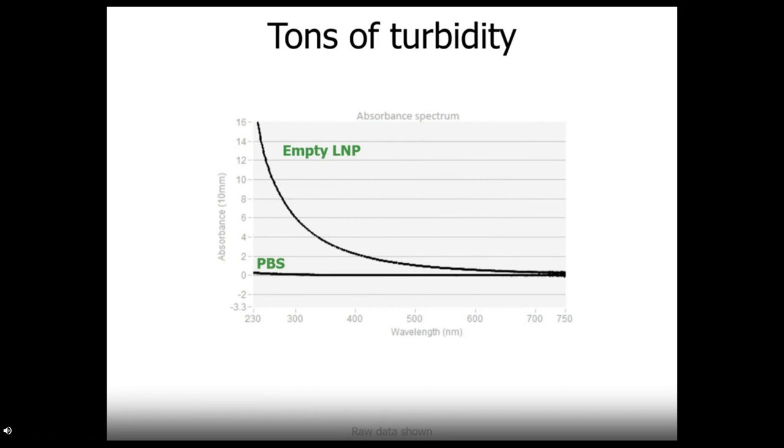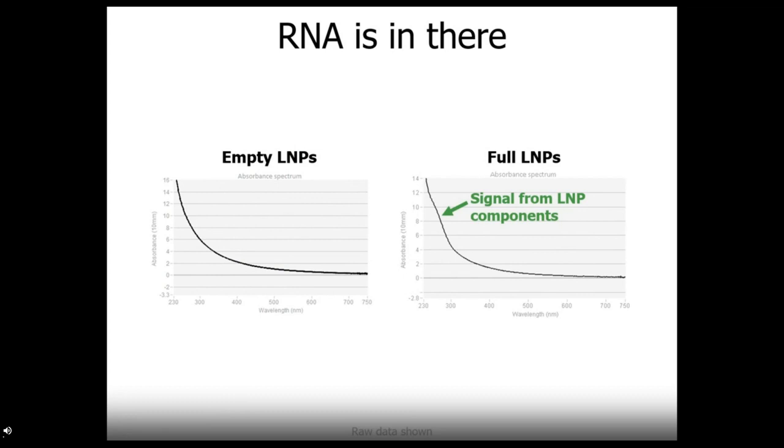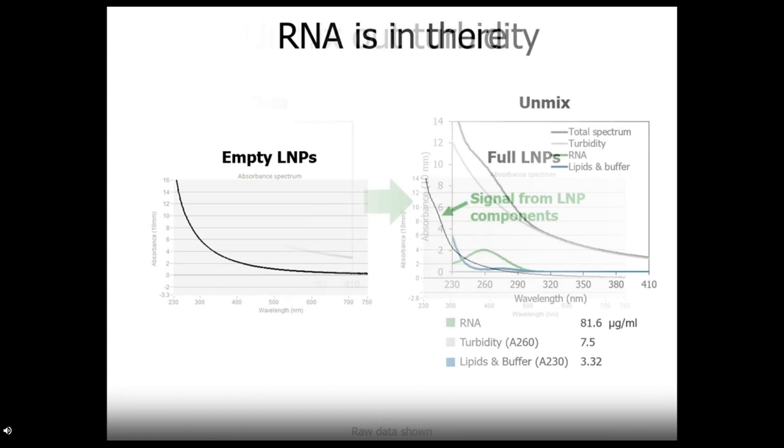Here's a quantitative look at all that turbidity, shown by comparing the signal from an empty LNP, so one that is not loaded with a nucleic acid, to a PBS buffer. These LNPs create a whole lot of signal that looks like absorbance but usually isn't helpful and just gets in the way. Because all that turbidity makes quantifying with traditional UV-Vis almost impossible, total RNA quant by UV-Vis is normally a big challenge. For example, if we squint at the full curve, we can see the RNA bump at about 260 nanometers, but the difference is pretty small. To analyze this, we have to separate out the signal from the turbidity, from the signal from the LNP absorbance due to RNA and other LNP components.